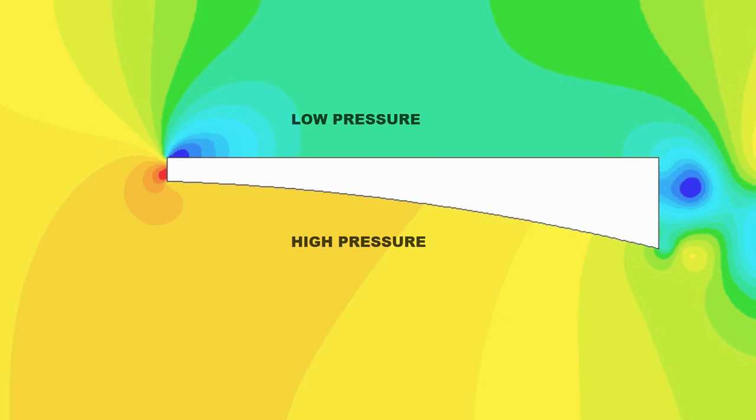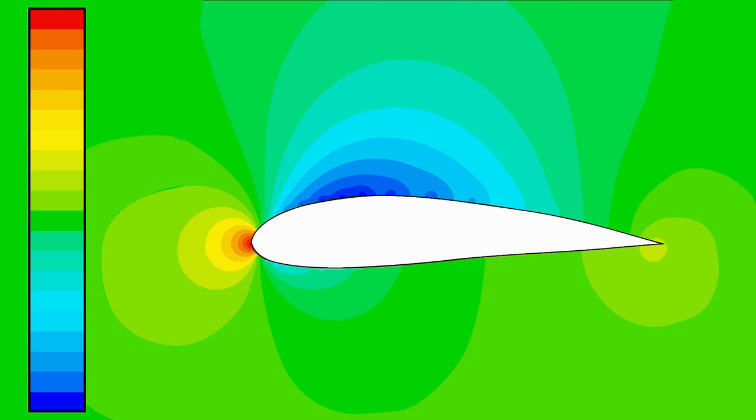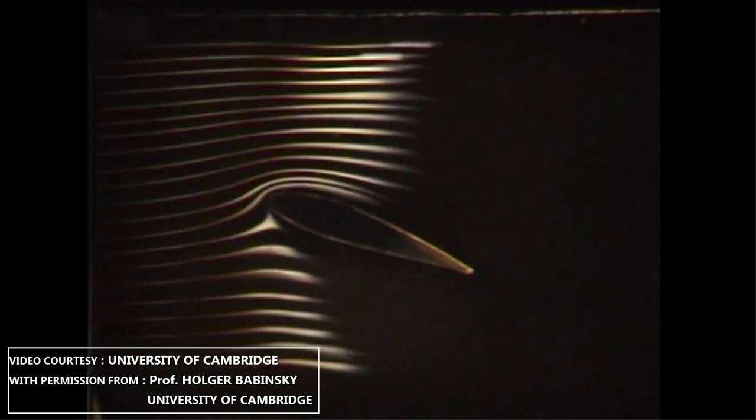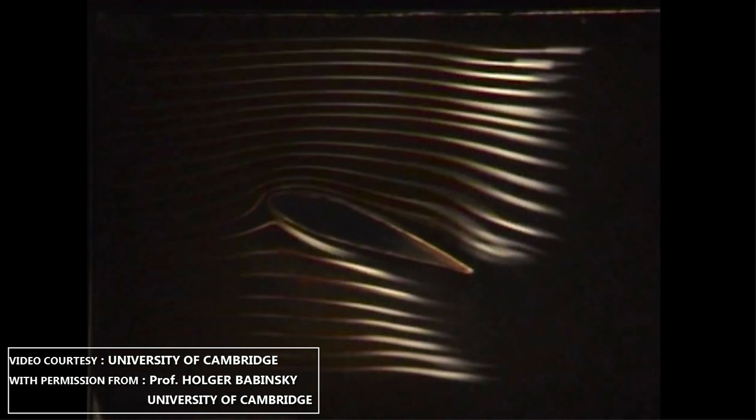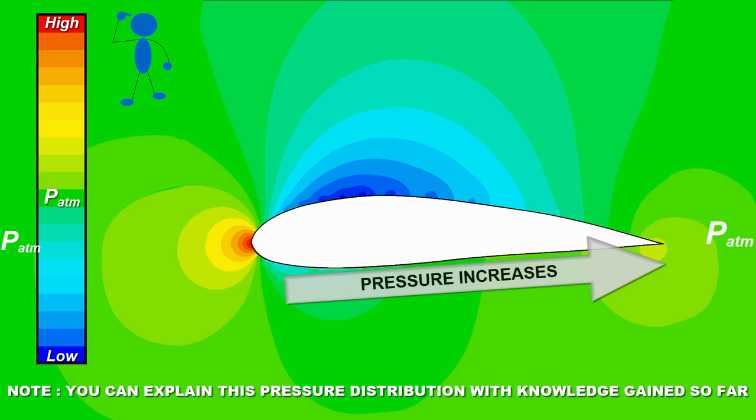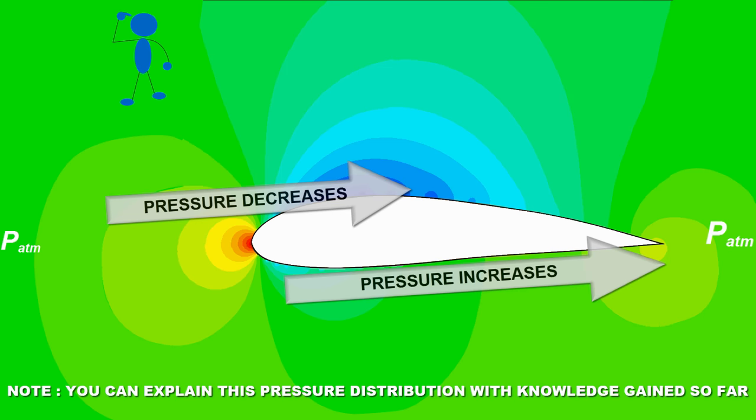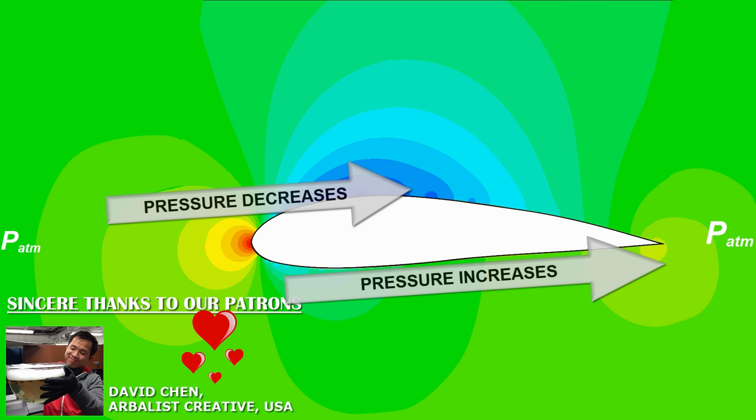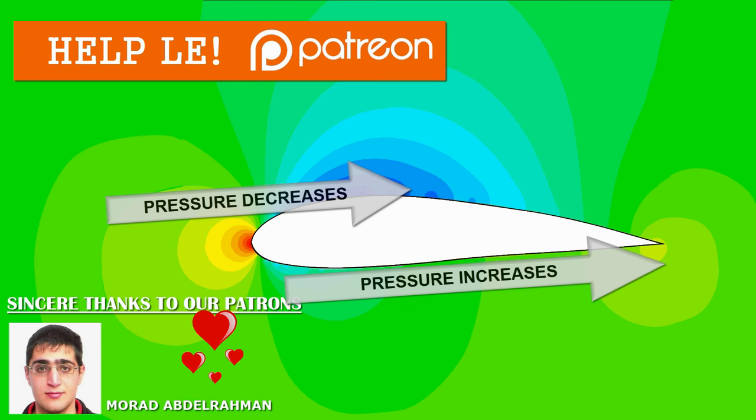If you understand what we have discussed so far, here's one brain teaser for you. In actual experiments, you can see that the air at the top of the airfoil moves much faster than the air at the bottom, and they never meet. Why is that? If you study this pressure gradient more closely, you'll find the answer. If you figure it out, please explain it in the message box. Otherwise, check out our next video.